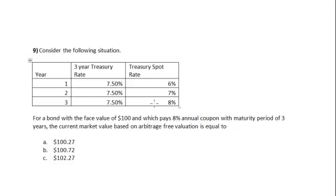Consider the following situation. For three years, year one, two, three, three-year treasury rate and treasury spot rate have been given for a bond with a face value of $100 and which pays 8% annual coupon with a maturity period of three years. The current market value based on the arbitrage-free valuation is equal to?